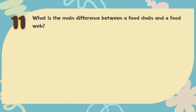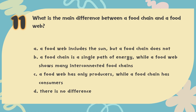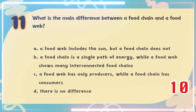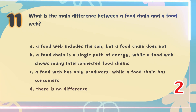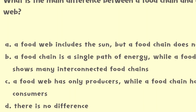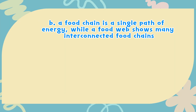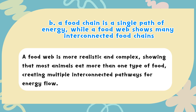Number 11. What is the main difference between a food chain and a food web? The choices are: A. A food web includes the sun, but a food chain does not; B. A food chain is a single path of energy, while a food web shows many interconnected food chains; C. A food web has only producers, while a food chain has consumers; D. There is no difference. The correct answer is B. A food chain is a single path of energy, while a food web shows many interconnected food chains. A food web is more realistic and complex, showing that most animals eat more than one type of food, creating multiple interconnected pathways for energy flow.